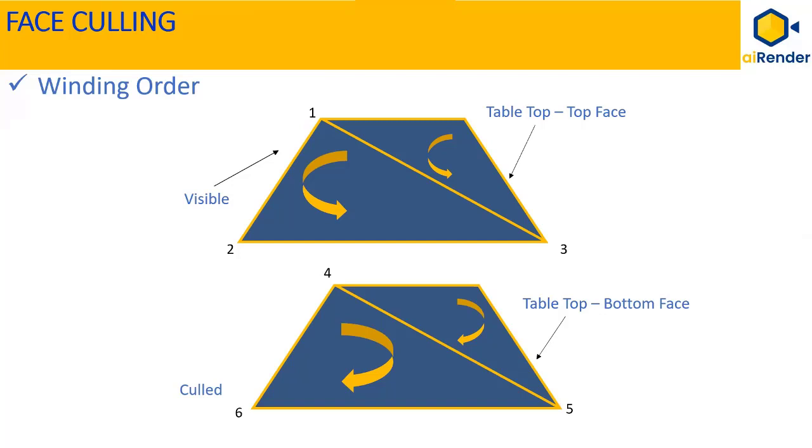Basically, the triangles on the top face of the table top are visible and the bottom face of the table top are occluded.